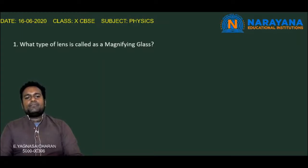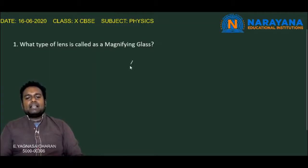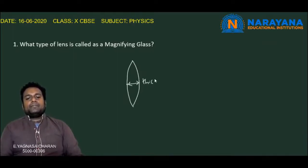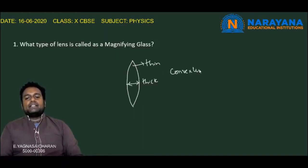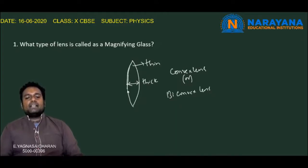Let us see the first question: What type of lens is called a magnifying glass? If you observe the magnifying glass, it is thick at the center and thin at the edges. So we can consider this magnifying glass as a convex lens, or it is a biconvex lens, as the two sides of the magnifying glass are bulged out.